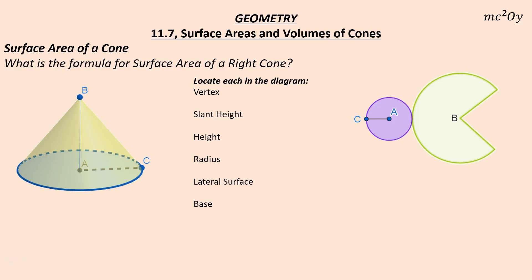We're going to talk about surface area of the cone. First thing we want to do is talk about some different parts. What I have here is a cone, and then I have the net of a cone — a cone that's been cut out and laid flat.